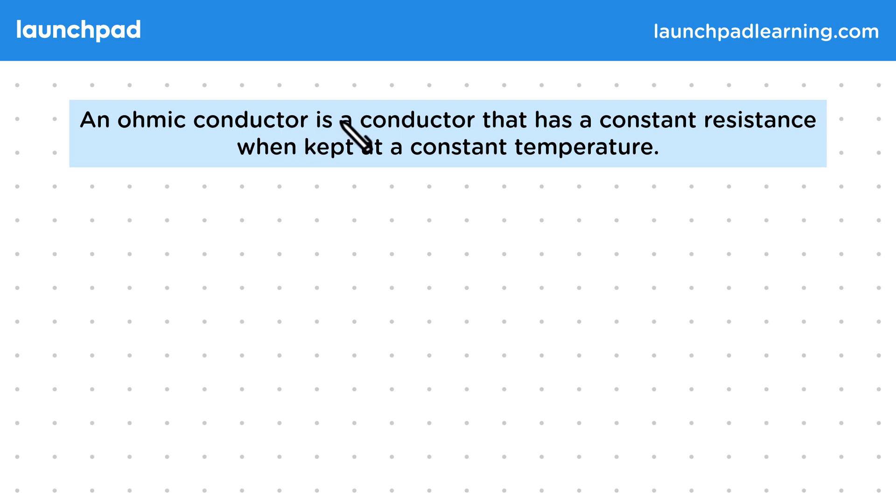An ohmic conductor is a conductor that has a constant resistance when kept at a constant temperature. So in general, when the temperature of a conductor increases, its resistance increases. So when writing this definition, make sure to remember that this is for constant temperatures.